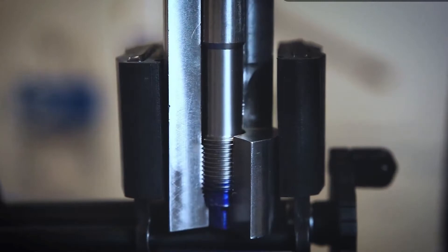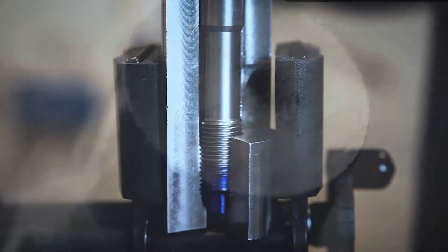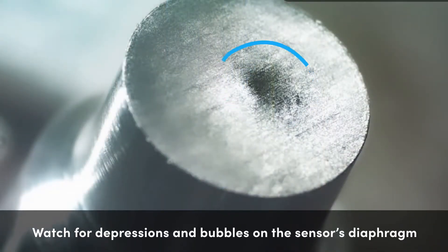If contact is made on the outer diameter of the tip, then there is potentially pressure building on the sensing end of the sensor. This can cause damage such as depressions or bubbles.